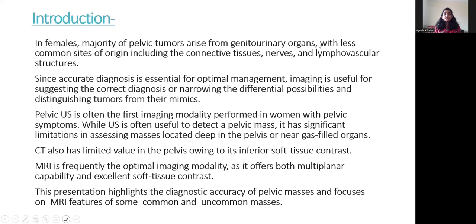In females, the majority of pelvic tumours arise from genitourinary organs, with less common sites of origin including connective tissue, nerves, and lymphovascular structures. Since accurate diagnosis is essential for optimal management, imaging is useful for suggesting the correct diagnosis, narrowing differential possibilities, and distinguishing tumours from their mimics.